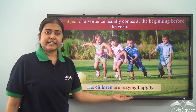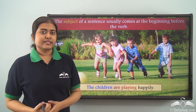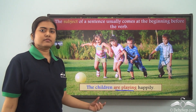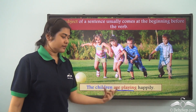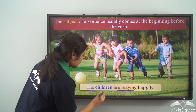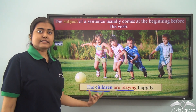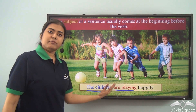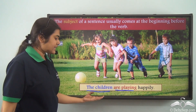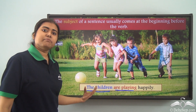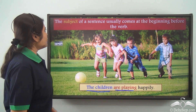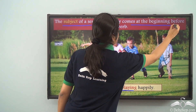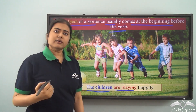'The children are playing happily.' Now in this sentence, what is the verb? 'Are playing.' Now who are playing happily? The children. So the subject of this sentence is 'the children,' and it comes before the verb. Not only that, it is also at the beginning of the sentence. So the subject of a sentence usually comes at the beginning, before the verb.